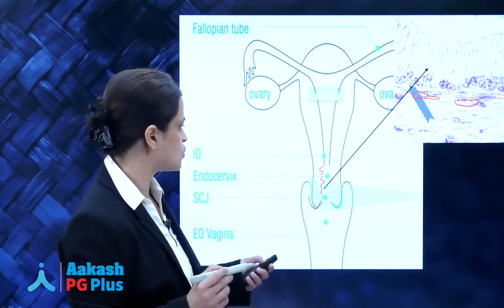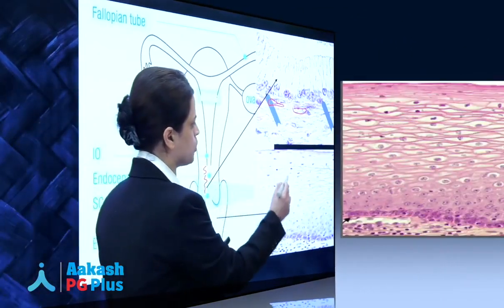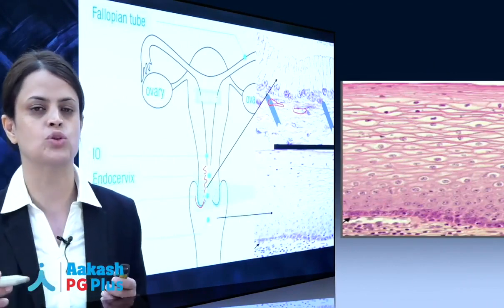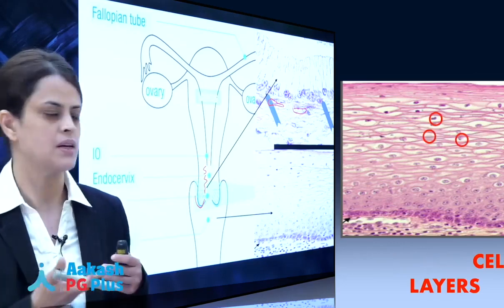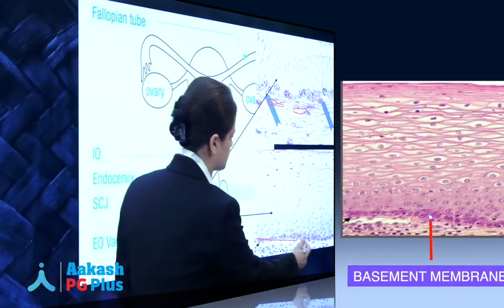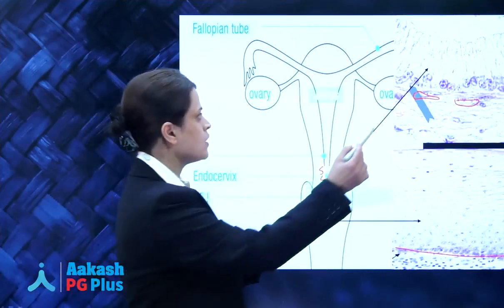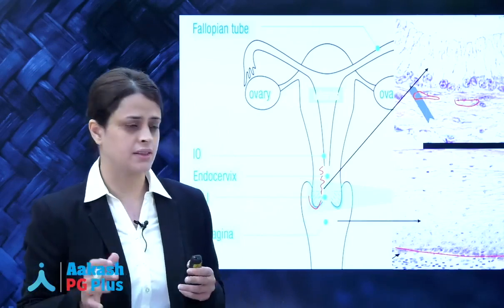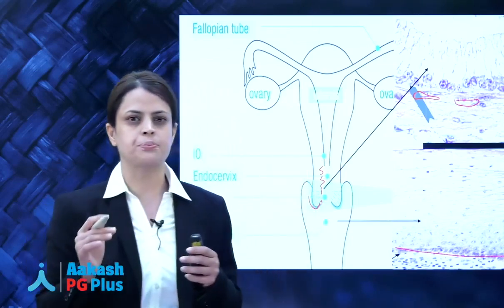The ectocervix, that is the part of the cervix which projects into the vagina, is lined by stratified squamous non-keratinized epithelium. Stratified squamous epithelium consists of multiple layers of epithelial cells resting upon a basement membrane. To the naked eye, the columnar epithelium of the endocervix appears bright blood red in color, whereas the epithelium of the ectocervix will appear pale pink in color.